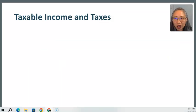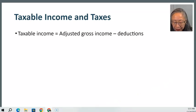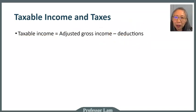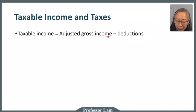Once you've determined your adjusted gross income and deduction, you can figure out your taxable income, which is your adjusted gross income minus the deduction. There are four main steps in computing taxes: first, compute the adjusted gross income; second, determine your deduction; third, subtract the deduction from AGI to get taxable income; and fourth, apply the tax rates.